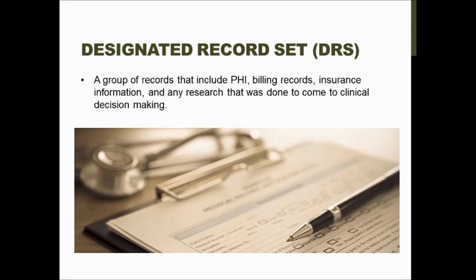There's a designated record set, which is a group of records that includes the protected health information, all of the billing records, all the insurance information, and also any research that was done to come to clinical decision making. Sometimes doctors will include research articles that show certain findings in order to back up their clinical decision making. For example, that same psychiatrist who discharged his suicidal ideations patient — maybe he has a research article attached to his chart that says a really great social support system is more beneficial than being in an inpatient facility for a certain demographic of patients. Having that kind of documentation to back up clinical decisions and including it in the designated record set is really important.